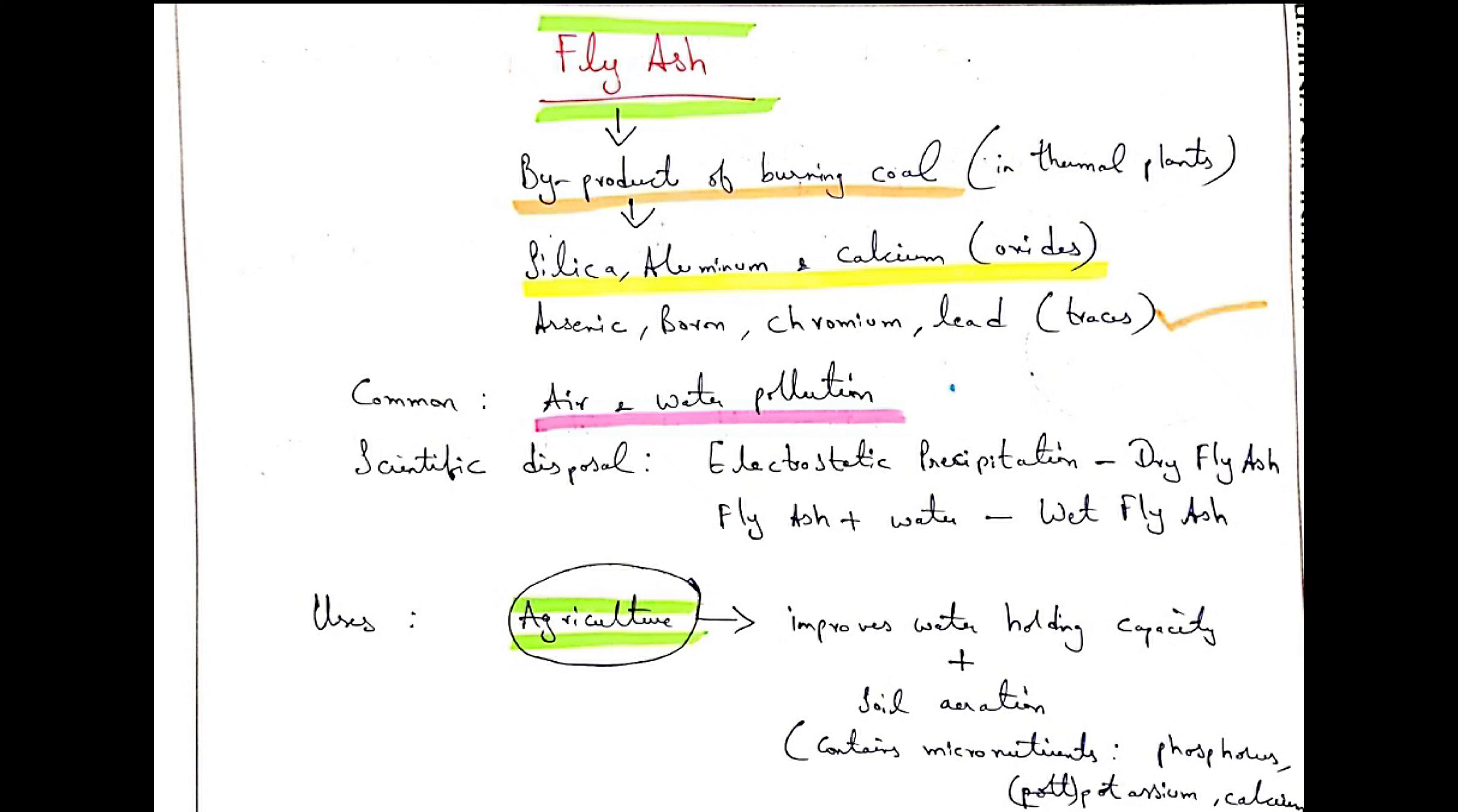We can find uses of fly ash in agriculture. In what cases? It improves water holding capacity and soil aeration. Fly ash contains micronutrients like phosphorus, potassium, and calcium. When coming to